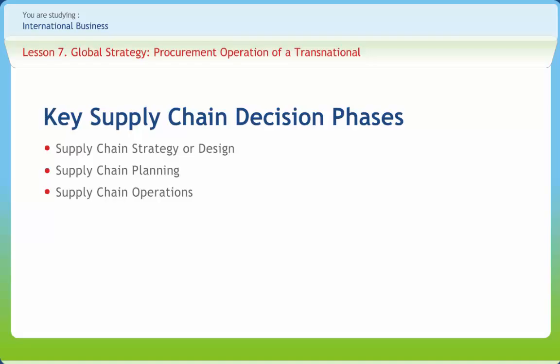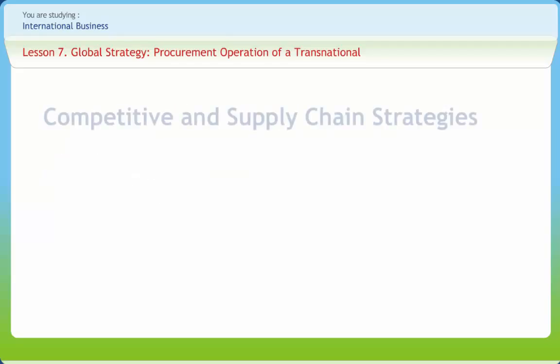In the supply chain operations phase, the time horizon is weekly or daily and the companies make decisions regarding individual customer orders. During this phase, firms allocate inventory or production to individual orders, set a date that an order is to be filled, generate pick lists at a warehouse, allocate an order to a particular shipping mode and shipment, set delivery schedules of trucks and place replenishment orders.